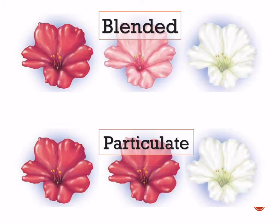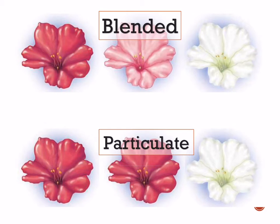So before Gregor Mendel did his work, this is what we thought: red and white would give us pink, something in between. But Mendel's theory and his work showed that inheritance was particulate. That is, there are heritable units and heritable particles that separate and do things, so you don't always get a blending. Instead, sometimes in one generation the white disappears and you get only red.